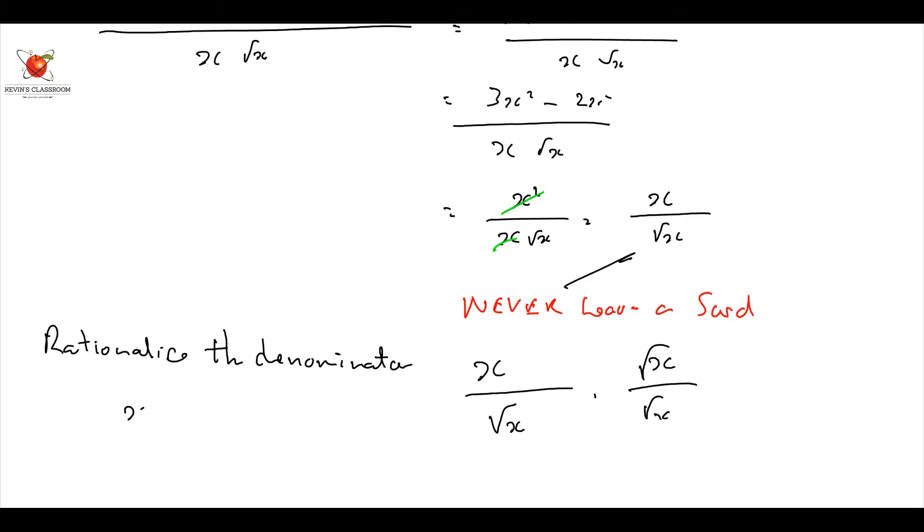Well, then I get on top, x root x, and at the bottom, root x times root x is that. Oh, look what happens. I end up with it cancelling out again, and I end up with, let's just do it properly, and finally, I end up with just root x.